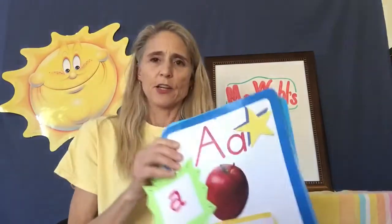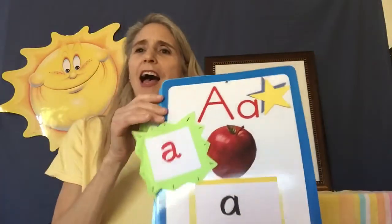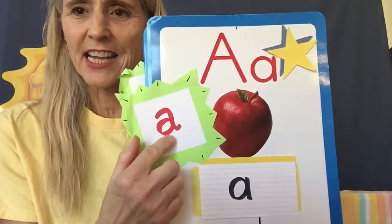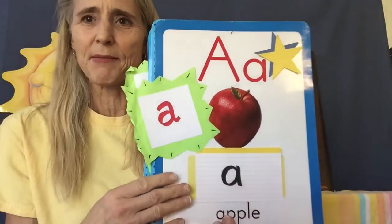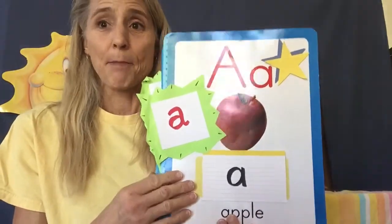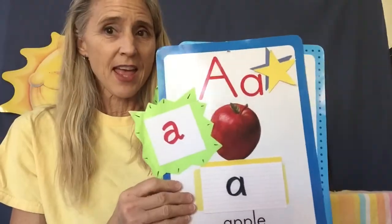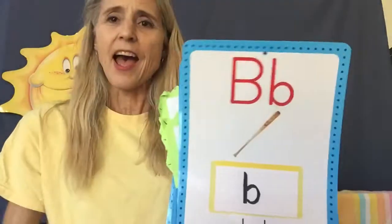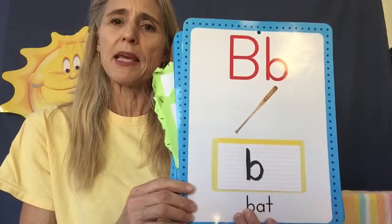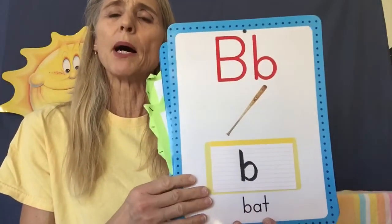We're going to start with our apple card, which makes the 'ah' sound. That's a fancy A — you might see it sometimes when you read books. Apple card A — ah, ah, ah. Bat card B — b, b, b. Camel card C — c, c, c.